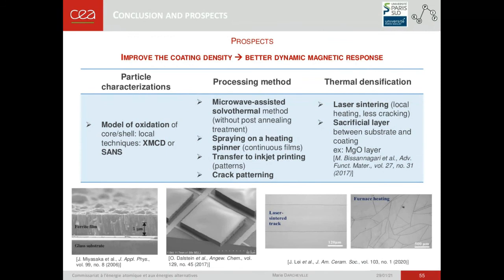In the future, it would be interesting to study the oxidation model more locally through, for example, X-ray magnetic circular dichroism or small-angle neutron scattering. Many prospects have been identified to improve coating density and obtain a better dynamic magnetic response at different scales of the process. On the one hand, concerning the processing method, different methods could be tried — for example, a microwave-assisted solvothermal method without a post-sintering treatment, or the spraying of precursor solutions on a heating substrate. These two methods could be transferred to inkjet printing to obtain patterned layers and also exploit crack patterning. On the other hand, another thermal densification technique could be tried: laser sintering, which induces less cracking due to local heating. Another approach is to introduce a sacrificial layer between the substrate and the coating in order to reduce constraints and reduce cracking. Thank you for your attention.